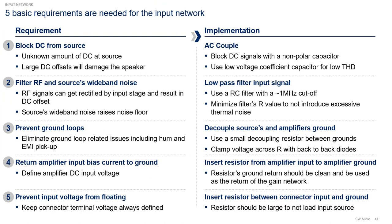Let's now look at the implementation specifics of the input network. Five basic requirements are needed: first, block DC from the source; second, filter RF and source wideband noise; three, prevent ground loops; four, return amplifier input bias current to ground; and five, prevent input voltage from floating.